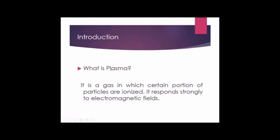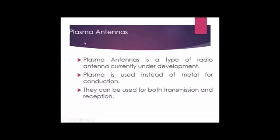What is plasma? Plasma is actually a gas in which certain particles are ionized. These ionized particles respond strongly to electromagnetic fields. That is why we have a concept called plasma antenna. This plasma antenna is a type of radio antenna which is currently under development — research is going on and the prototype has been prepared. Plasma is used instead of metal for conduction, and they can be used for both transmission and reception.